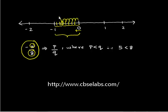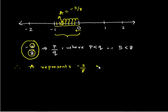Which indicates the rational number negative 5 upon 8 on the number line. Therefore A represents negative 5 upon 8 on the number line.